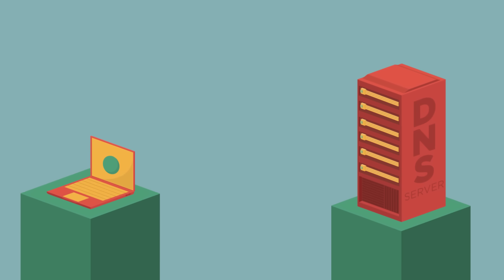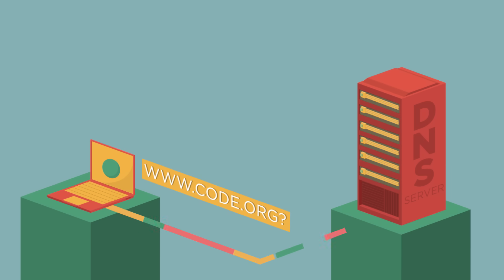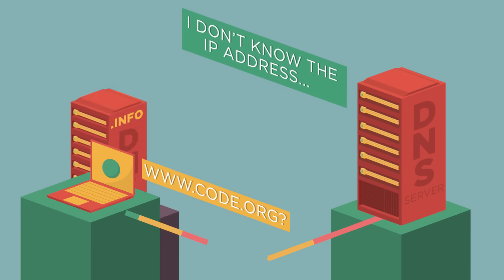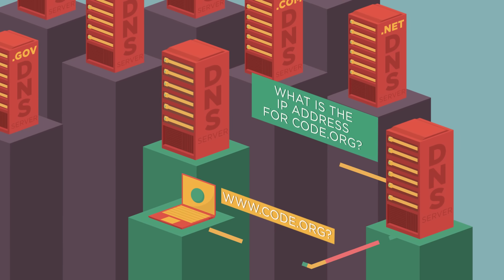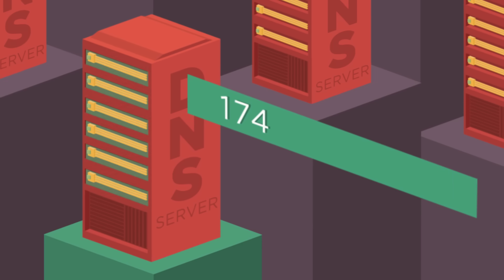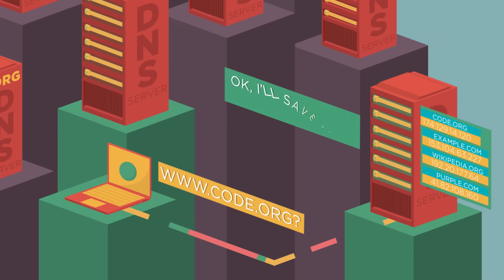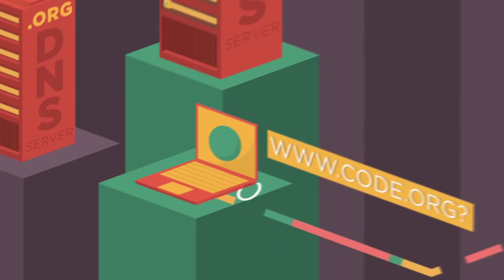Then it goes a little something like this. 'Hey, I want to go to www.code.org.' 'I don't know the IP address for that domain. Let me ask around.' 'Hey, you know how to get to code.org?' 'Yeah, I got it right here. It's 174.129.14.120.' 'Oh okay, great. Thanks. I'm going to write that down and save it for later in case I need it.' 'Hey, here's that address you wanted.' 'Awesome, thank you.'